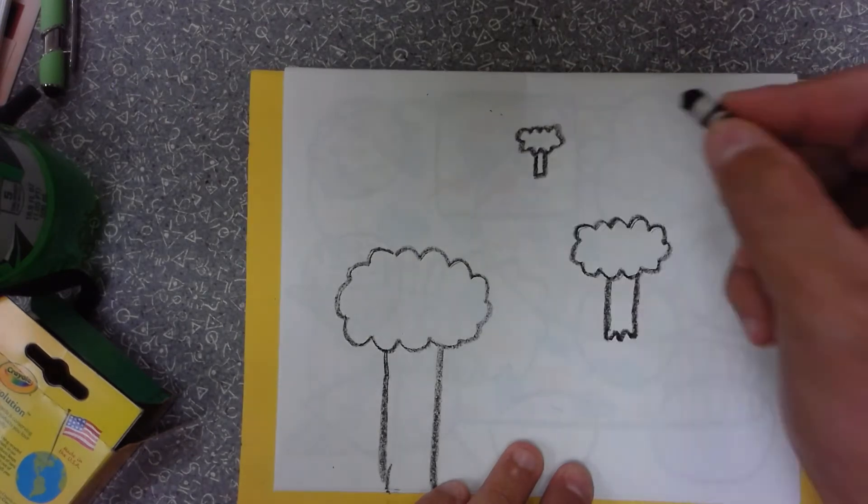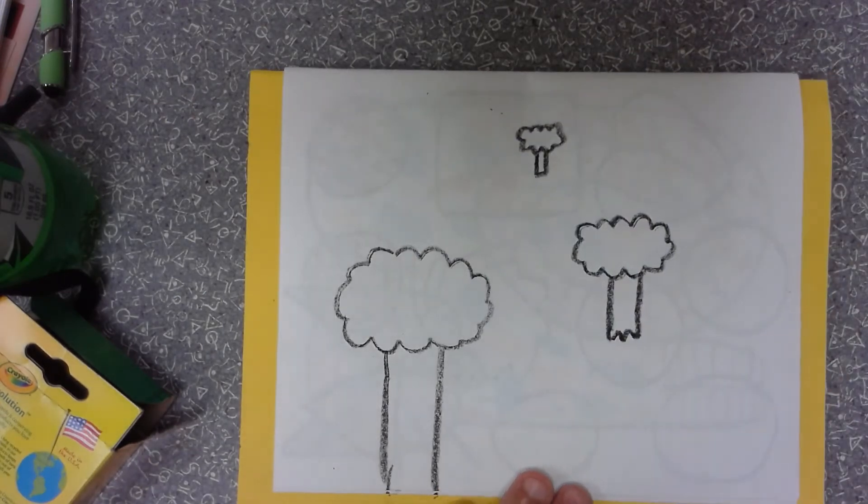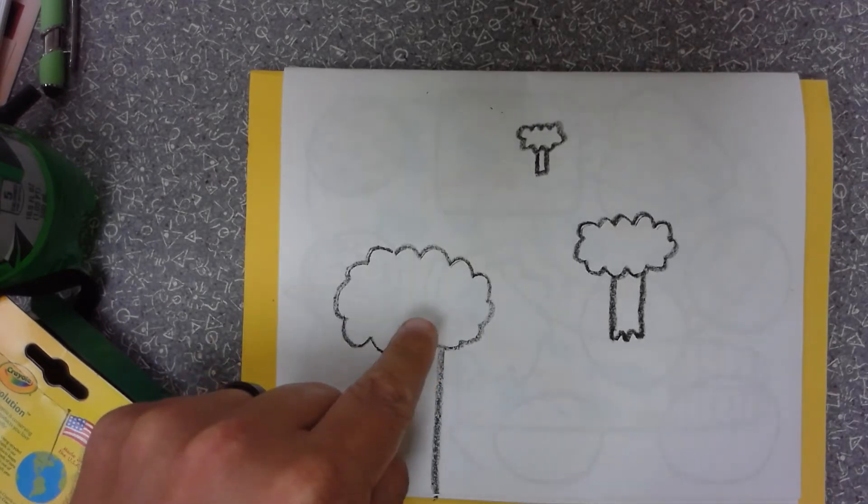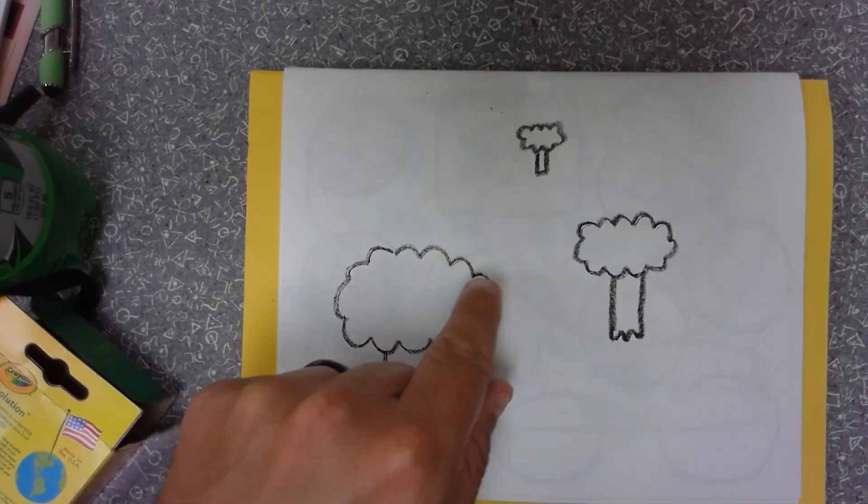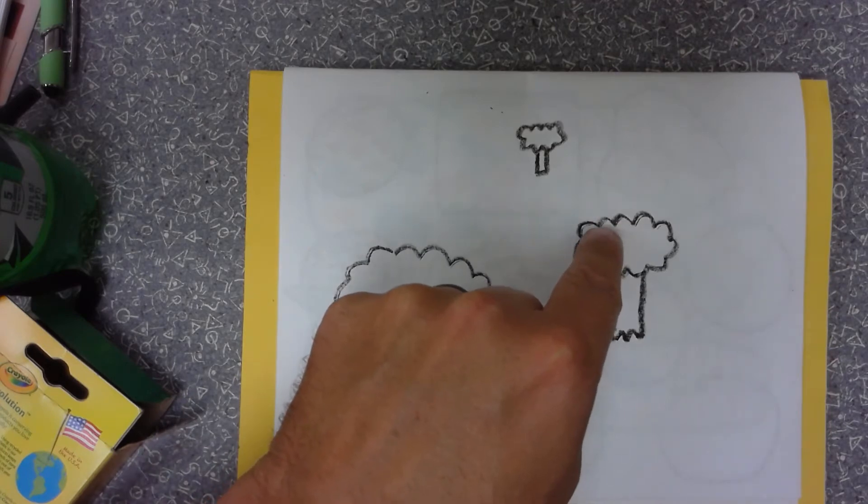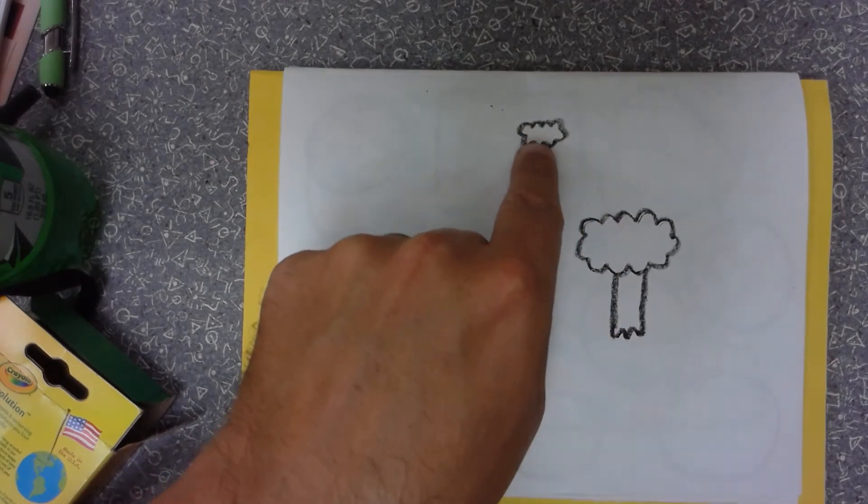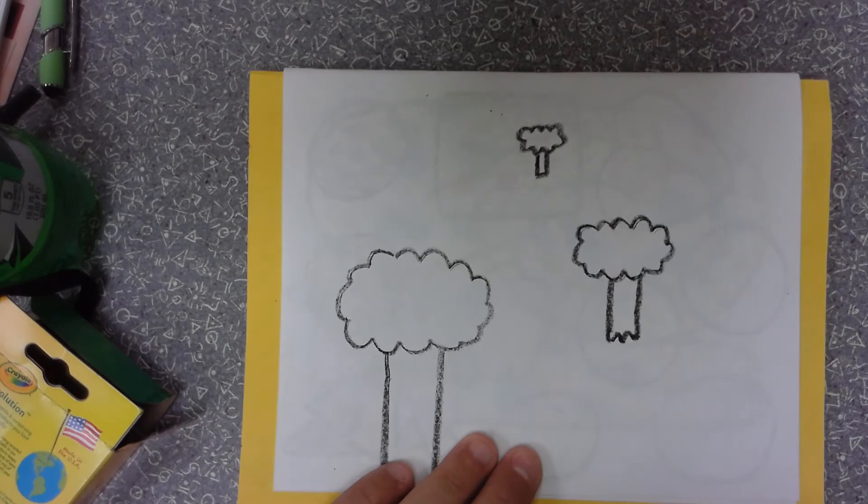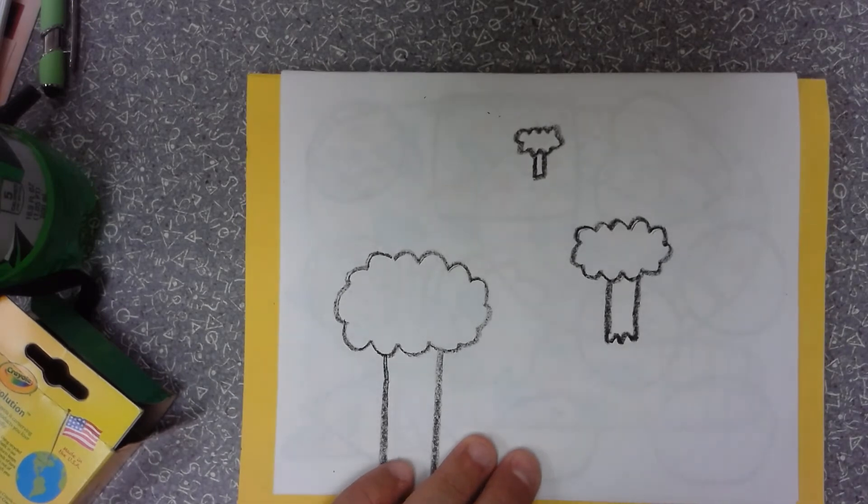Now these trees look like they're in space. This is the closest one to us, and as it goes back it gets smaller and smaller. Now our landscape is missing something called a horizon line.